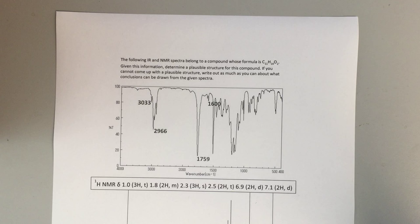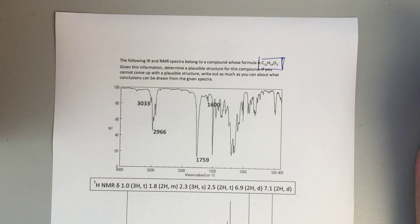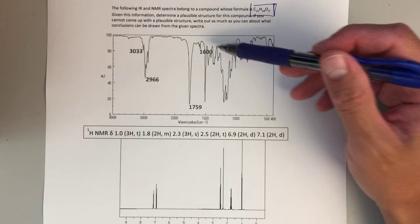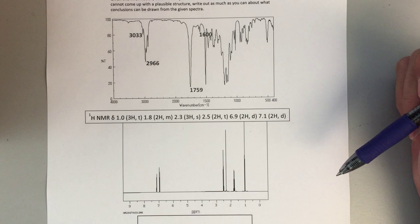Alright class, so this is the big picture problem for our IR and NMR spectroscopy sections. This problem is asking us to come up with a plausible structure for a given molecule. The information given to us is the formula C11H14O2, and we've got an IR spectrum with some peaks that are labeled and an NMR spectrum with all of the relevant NMR data.